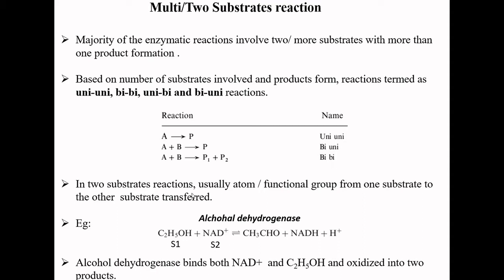In the case of two-substrate reactions, atoms or functional groups of one substrate can be transferred to another substrate. For example, in the formation of acetaldehyde from alcohol using alcohol dehydrogenase, alcohol and NAD are the two substrates, which produce acetaldehyde and NADH. One atom from C2H5OH is transferred to form NADH, so ethanol gets oxidized and forms acetaldehyde plus NADH.